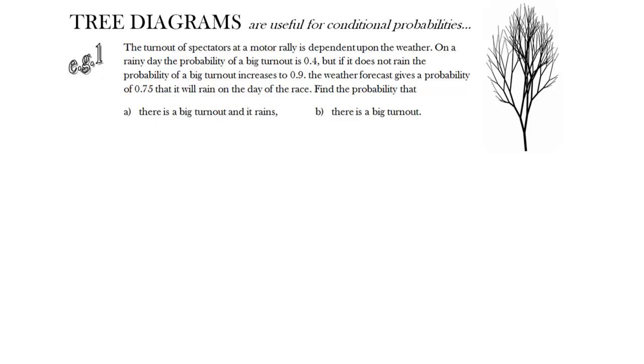So we'll get straight in with a tree diagram. We'll just use some notation to represent the events. So R is the event it rains, and we'll use B for the event there is a big turnout. Whether or not there's a big turnout depends upon whether it rains. So raining or not raining is the first split in our tree diagram. We know that on this occasion there's a 0.75 probability of it raining, therefore 0.25 is the probability that it doesn't rain.